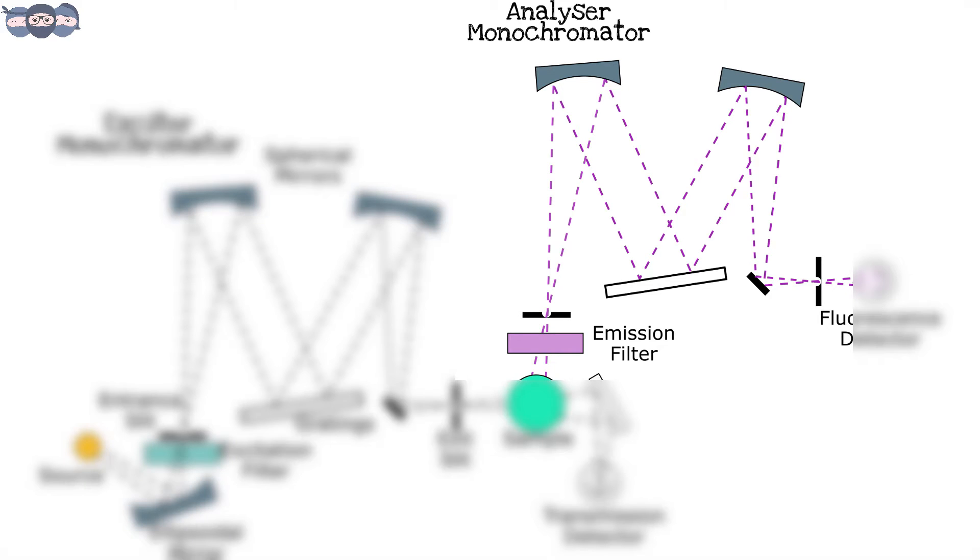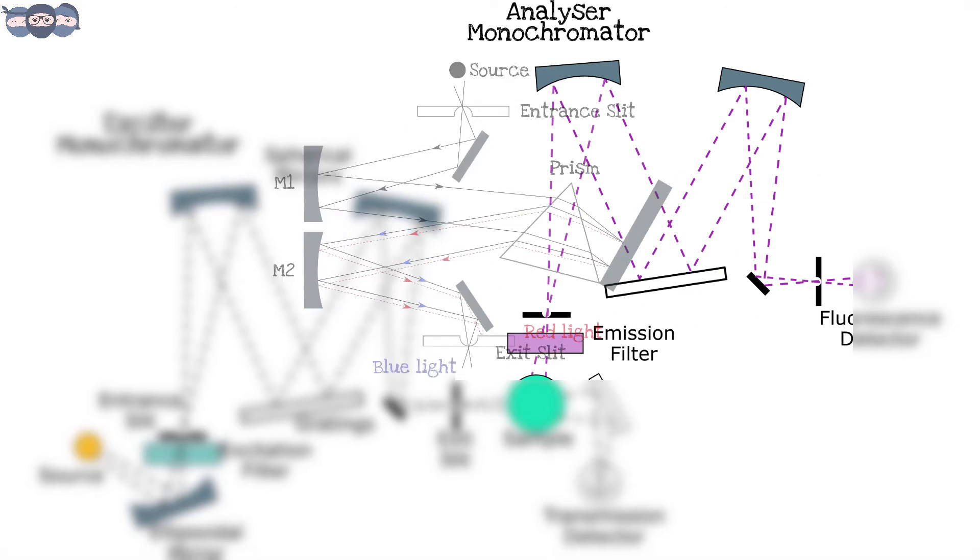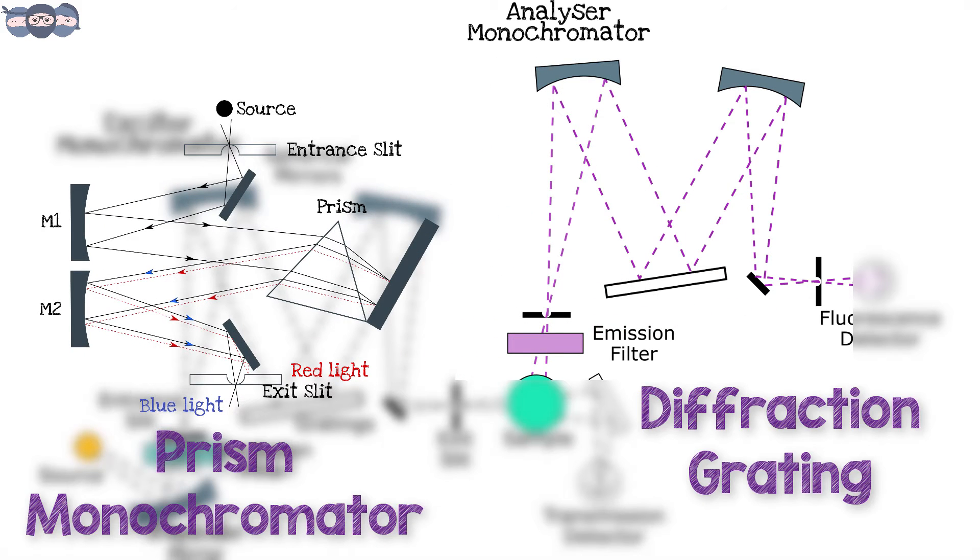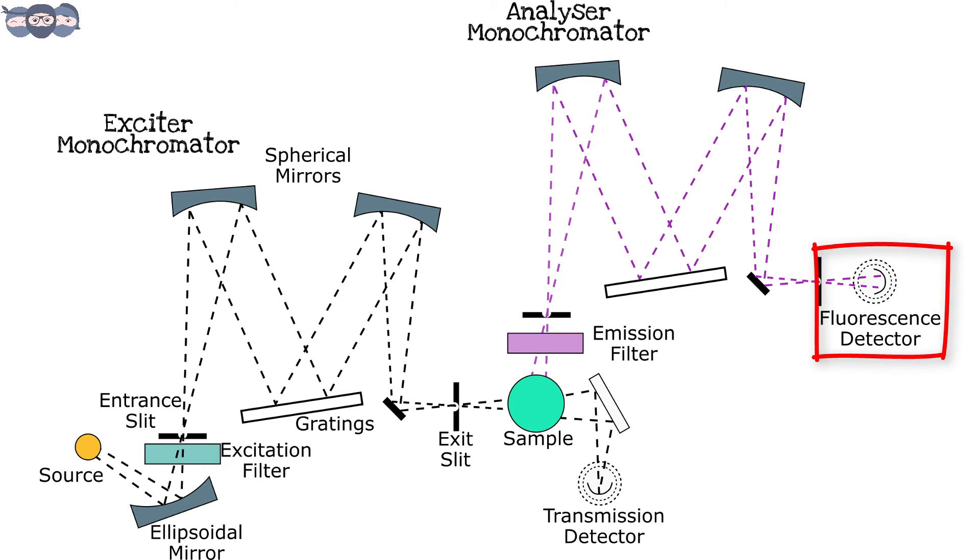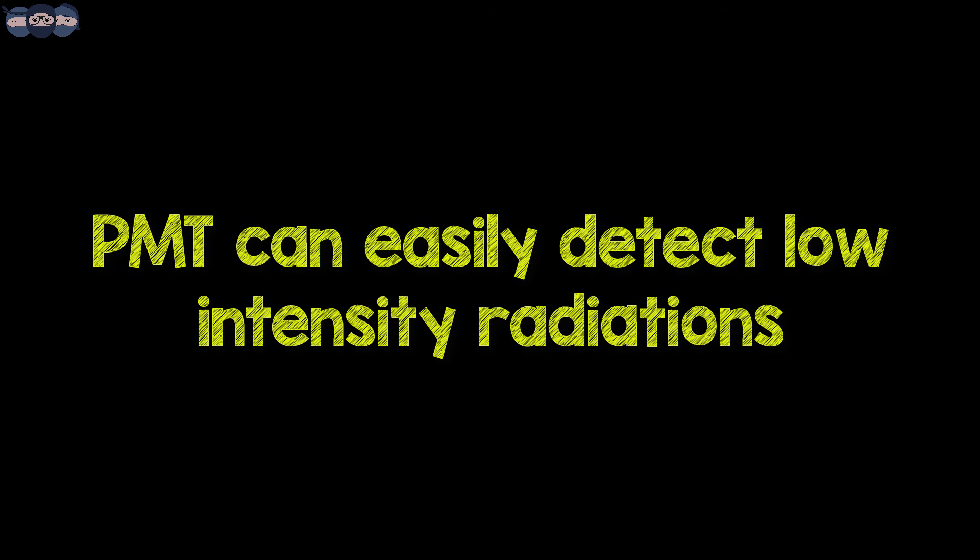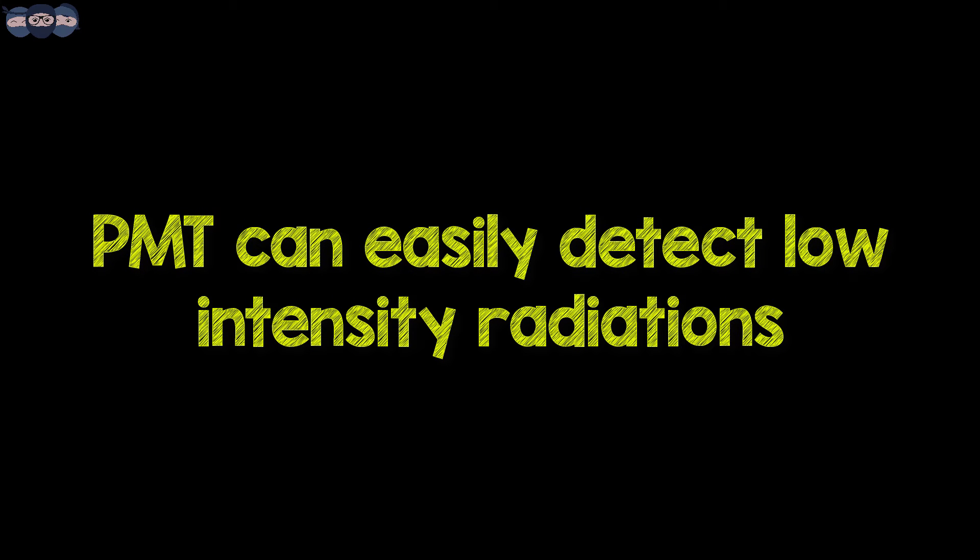The analyzer monochromator is also a prism monochromator or a diffraction grating. The next component is the fluorescence detector, which is generally a PMT. PMTs are used as even the slightest radiation or low intensity radiation is easily measured by them.